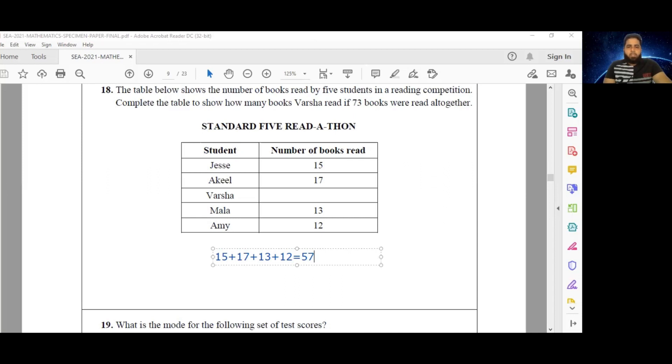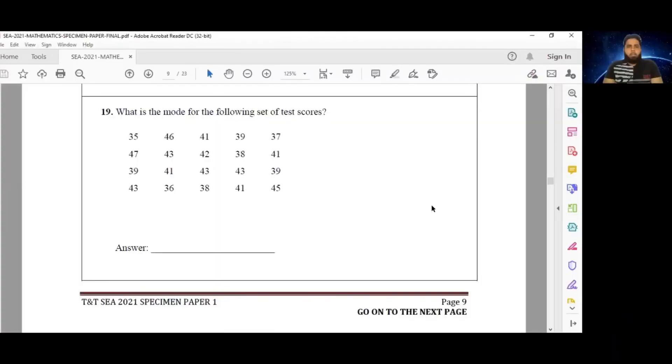All right, so 57 books were read by four of the students in the competition. So my final step would be to subtract that 57 from 73. And that is going to give me an answer of 16. Okay, so 16 books were read by Basha.